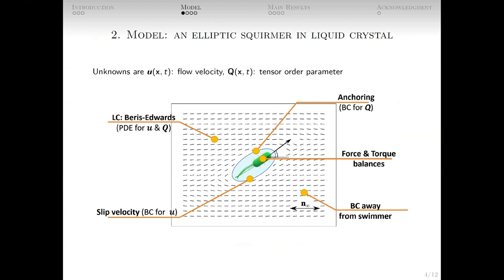The liquid crystal is a state in between a liquid and a solid crystal, so the corresponding model has two unknowns: flow field U and tensorial order parameter Q. The liquid crystal is described by the well-established Baris-Edwards PDE model. The geometry of the swimmer is simplified to an ellipse or an ellipsoid with a prescribed slip velocity on its surface. Such a model of a swimmer is also known as squirmer.